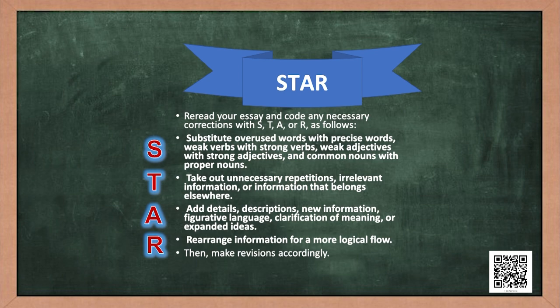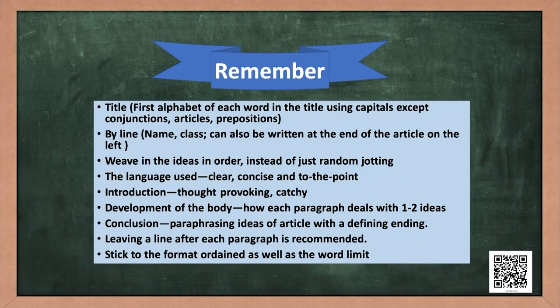Now I am confident that I also know the magic and process of writing. Just to revise: remember the title — the first alphabet of each word in the title should be capital, except conjunctions, articles, and prepositions. The byline comes next, which includes the name and class, also to be written at the end of the article on the left. Weave ideas in order instead of random jotting. The language should be clear, concise, and to the point. The introduction should be thought-provoking and catchy. Each paragraph in the body deals with one or two ideas, and the conclusion should paraphrase the ideas with a definite ending. Leave a line after each paragraph, and stick to the format and word limit.